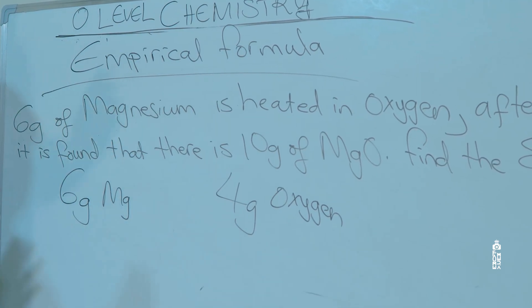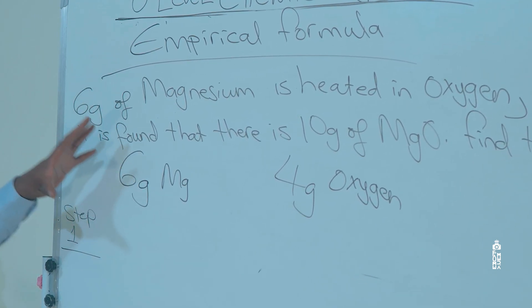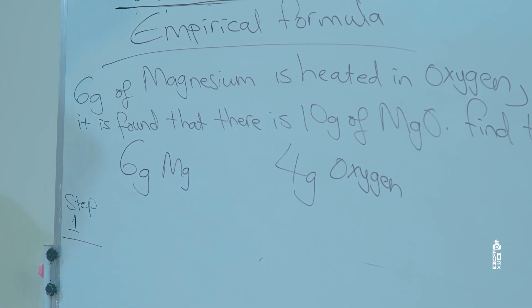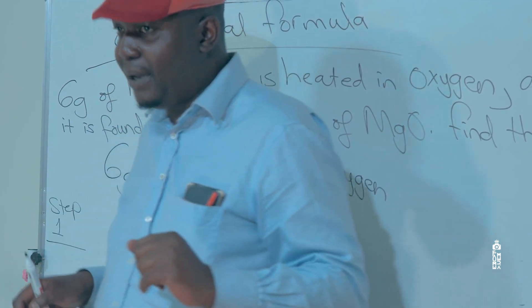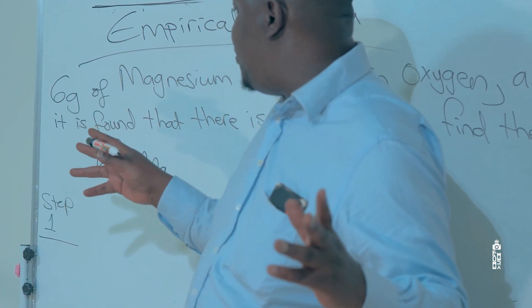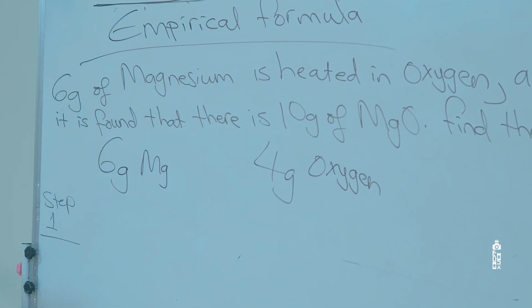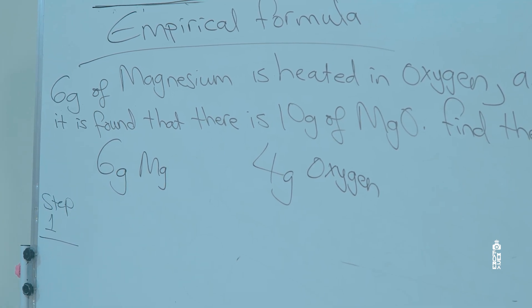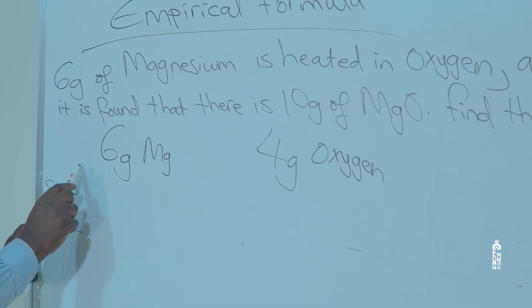Step number one in calculating empirical formula: you divide the masses or the percentages by the relative atomic mass of each and every individual element. If you go in the periodic table, magnesium has got a mass number of 24 and oxygen has got a mass number of 16.